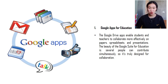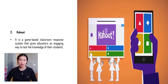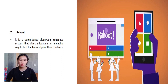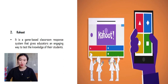There is also never a need to keep several iterations — document history features allow you to revert to previous versions of the document. The second tool is Kahoot. Kahoot is a game-based classroom response system that gives educators an engaging way to test the knowledge of their students. Kahoot can also be used to boost collaboration by encouraging students to be the leaders and quiz-makers.